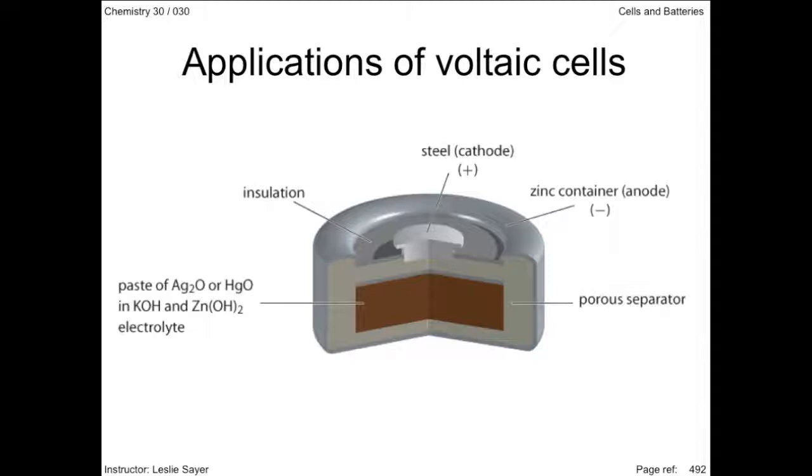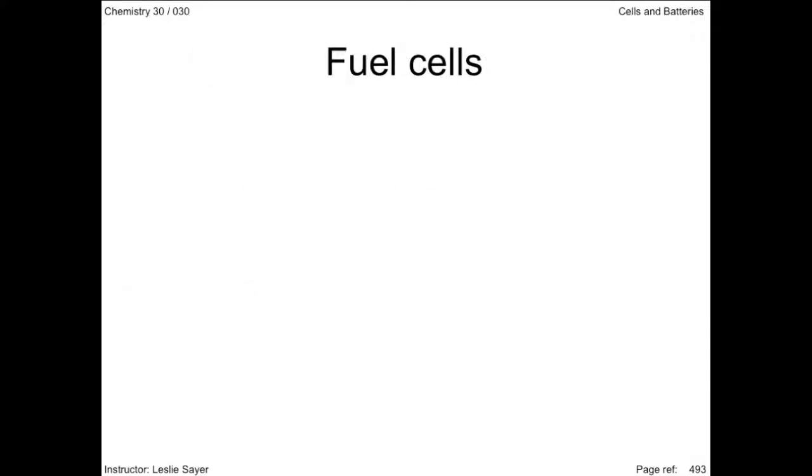A fuel cell is a voltaic cell that has a continuous flow of reactants into the cell and products out of the cell. The combustion engine of a car has a continuous flow of gasoline into it and a continuous flow of gases out of it. However, the fuel cell differs by converting the fuel directly into electrical energy, making it more efficient and cleaner than engines that burn carbon-based fuels. In the hydrogen fuel cell, the waste product is pure water.